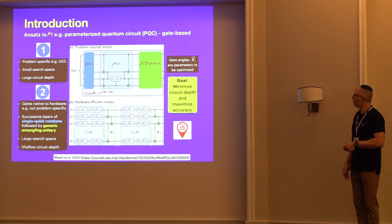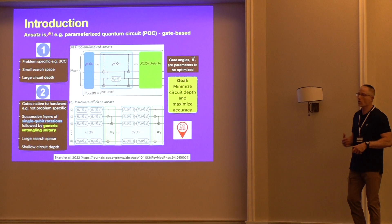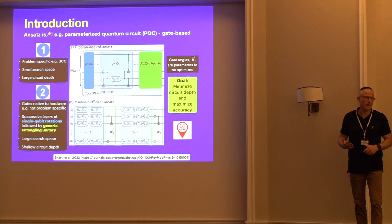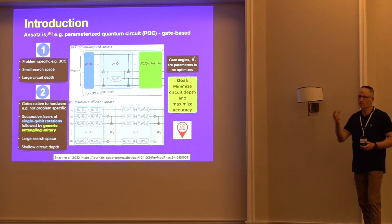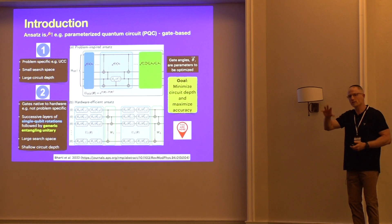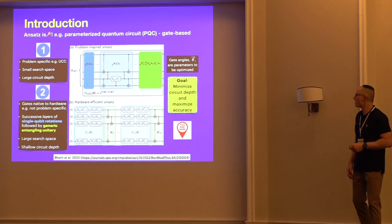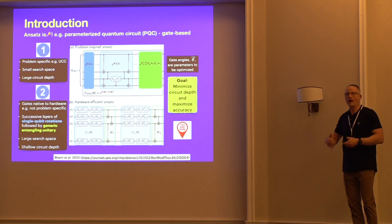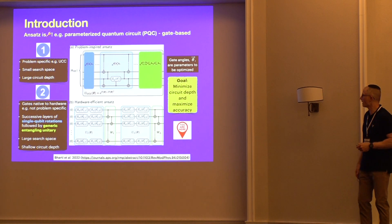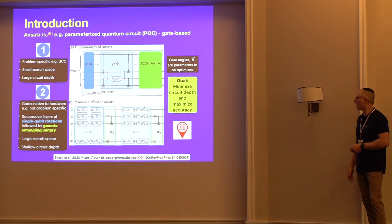The second ansatz is the so-called hardware-efficient ansatz. As the name suggests, this is an ansatz that's built up from gates that are native to the hardware. So it's not problem-specific, it's sort of one-size-fits-all. It usually takes the form of successive layers of single qubit rotations followed by generic entangling gates, and this is repeated as many layers as you want.